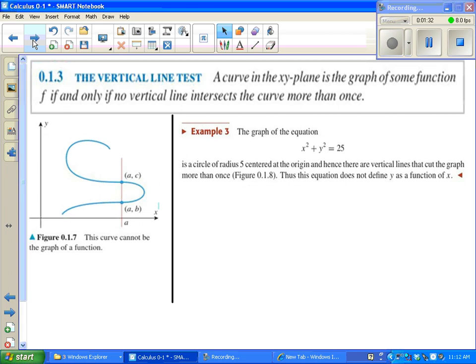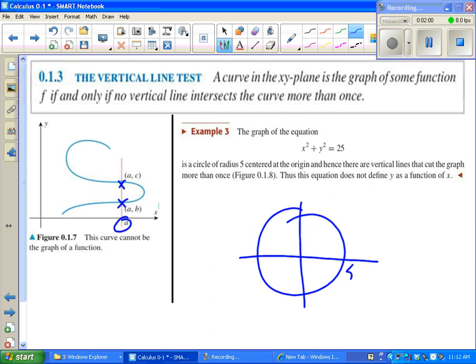The vertical line test should be familiar to you. Any time you can draw a vertical line through a graph and hit two or more points, that means the whole graph is not a function. What's really going on there is you have an input that has two outputs, and that breaks the rule of a function. x squared plus y squared equals 25 is a circle with radius 5. Clearly this does not pass the vertical line test, so this is not a function.